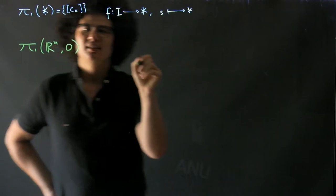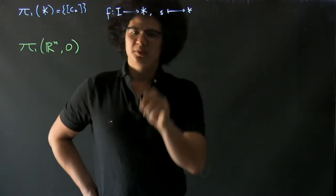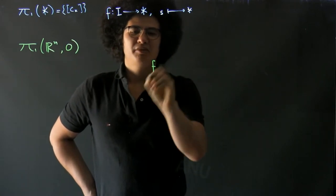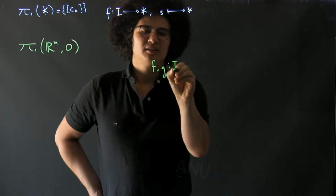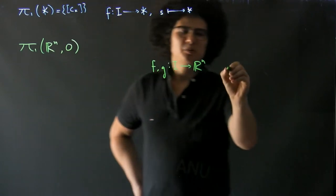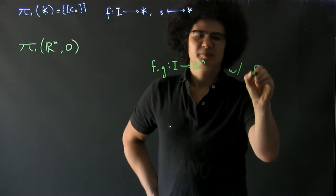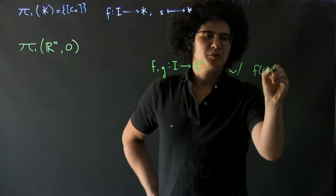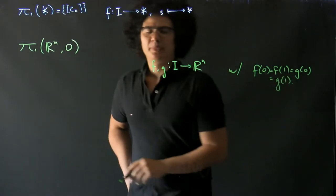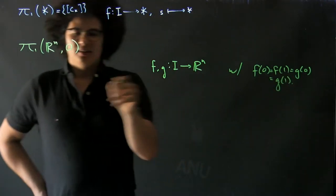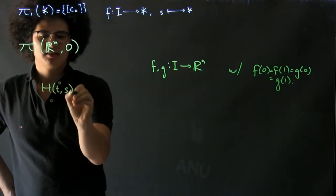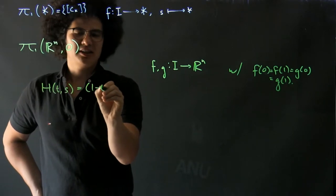We've seen that two paths in R^n with the same start and end point are homotopic. So F and G mapping into R^n with F(0) = F(1) = G(0) = G(1) are homotopic by just a linear homotopy.